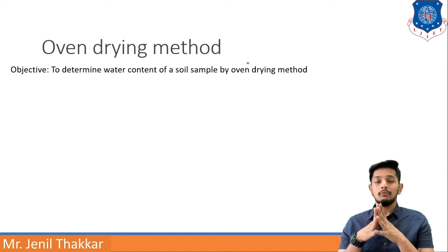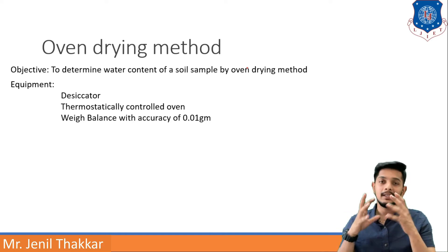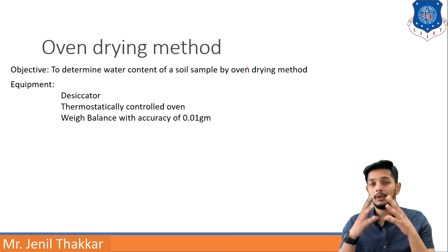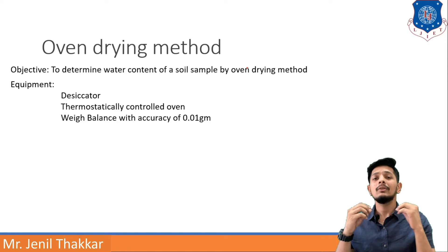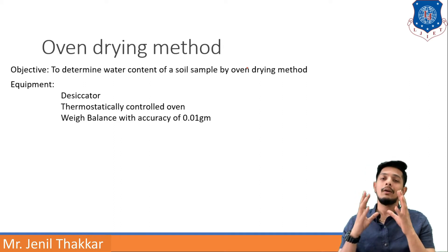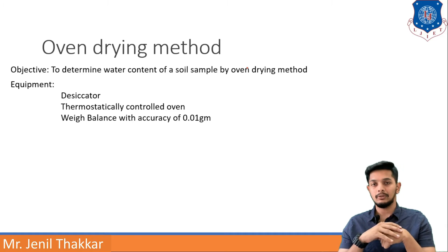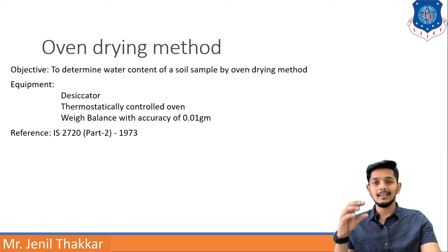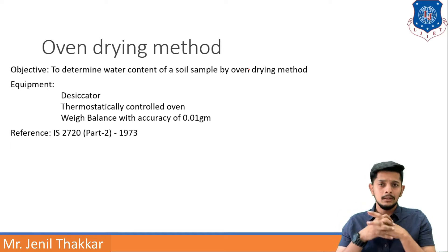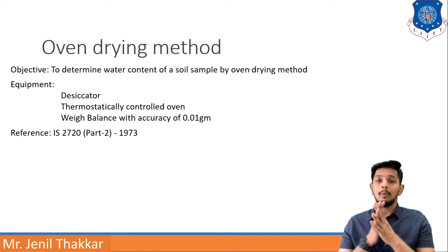The objective of this test is to determine the water content of a soil sample. Equipment required: a desiccator — a device that contains moisture within the bowl and does not allow vapor to escape; a thermostatically controlled oven; and a weighing balance with accuracy of 0.01 gram. The reference used for this method is IS 2720 Part 2, 1973 — an Indian Standard code providing methods of testing.